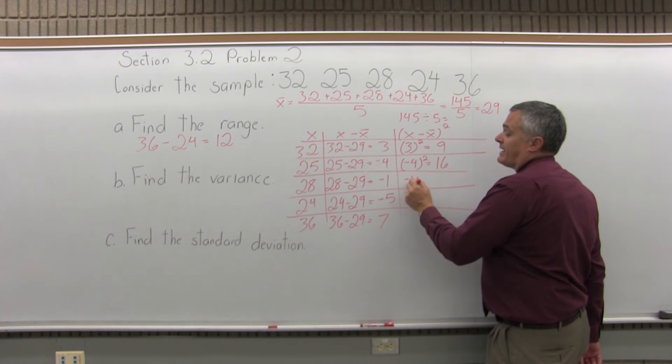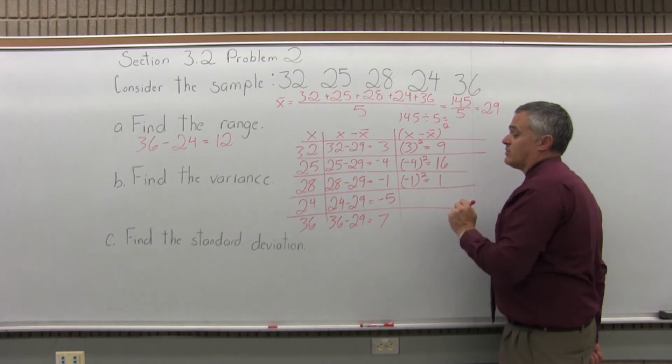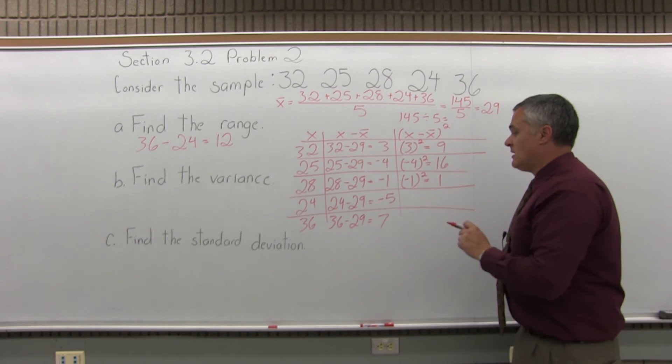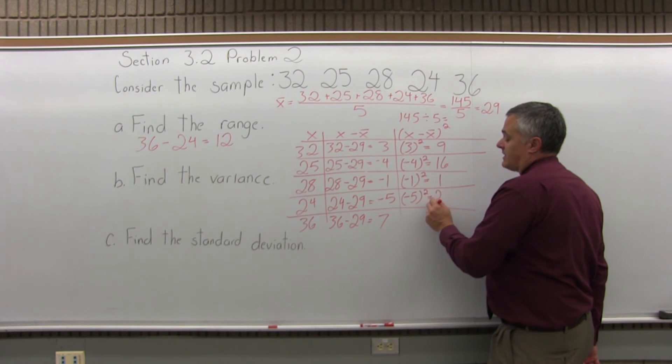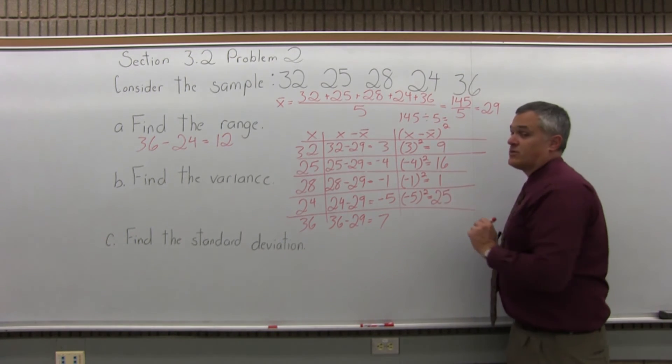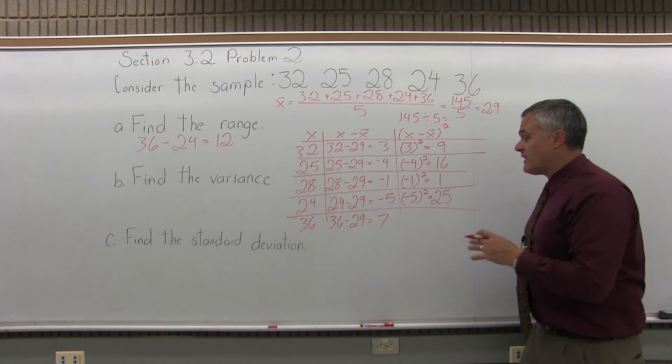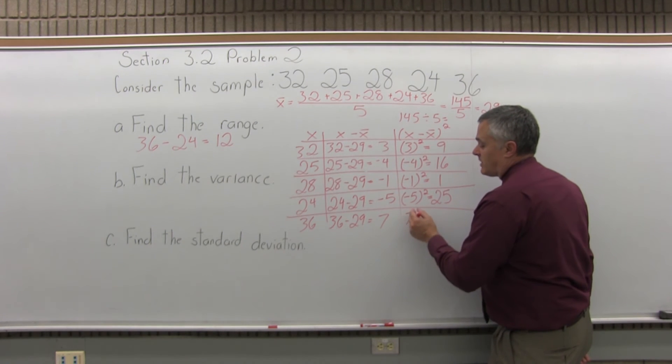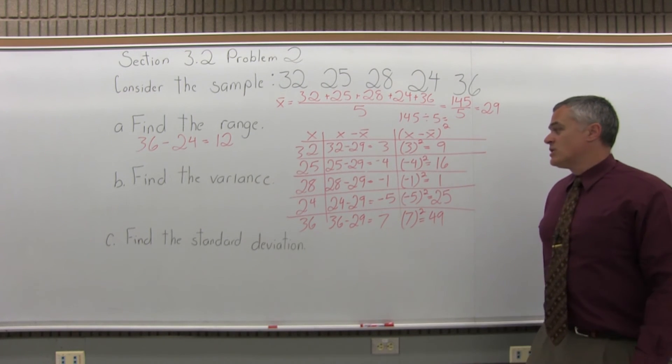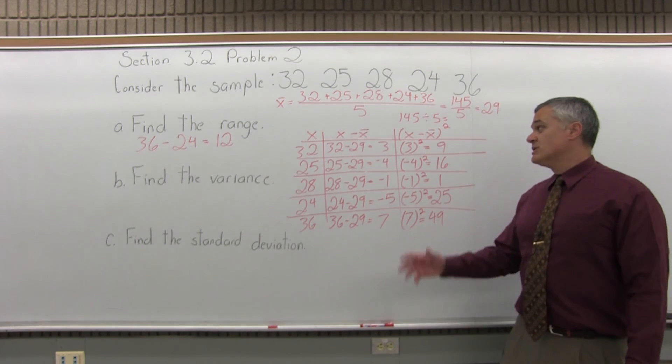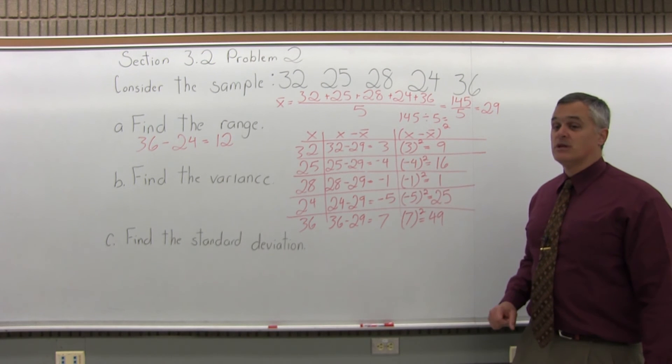The middle row, X minus X bar was minus 1. So, I'll do minus 1 second power. Minus 1 times minus 1 is positive 1. Next row down, X minus X bar was negative 5. So, I'll do negative 5 second power. Negative 5 times negative 5 is positive 25. And then, finally, in the bottom row, X minus X bar was 7. So, 7 second power. 7 times 7 is 49. That's step 2 of 4 steps, which is fill out the chart. There it is. We filled it out.